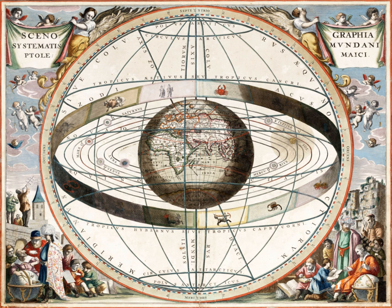Obsolete branches of inquiry. Alchemy, which led to the development of chemistry. Astrology, which led to the development of astronomy. Phrenology, a pseudoscience. Numerology, a pseudoscience.